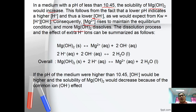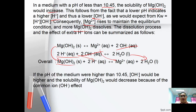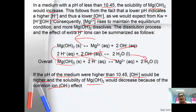The dissolution process and the effect of extra H⁺ can be summarized by the overall equation: Mg(OH)₂ + 2H⁺ → Mg²⁺ + 2H₂O. However, if the pH is higher than 10.45, [OH⁻] will be higher, and the common ion effect causes the solubility to decrease due to a shift of equilibrium to the left.